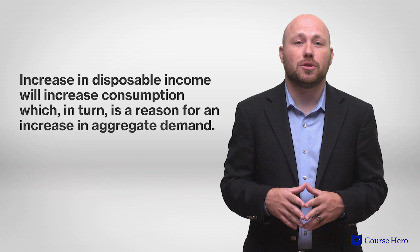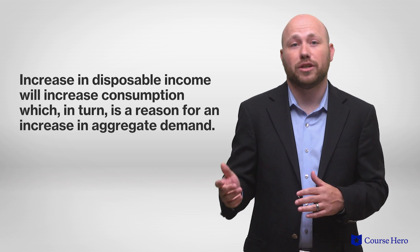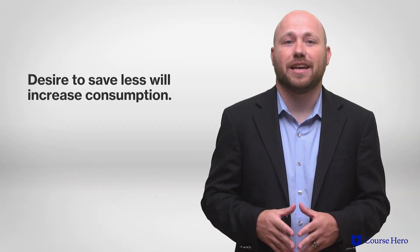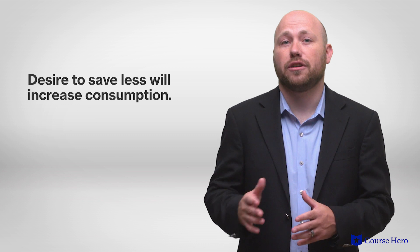An increase in disposable income will increase consumption, which in turn is a reason for an increase in aggregate demand. Another factor that will increase consumption will be the desire to save less. This is essentially an increase in MPC, which increases the slope of the consumption function. If these factors move in opposite directions, it will lead to a decrease in consumption.